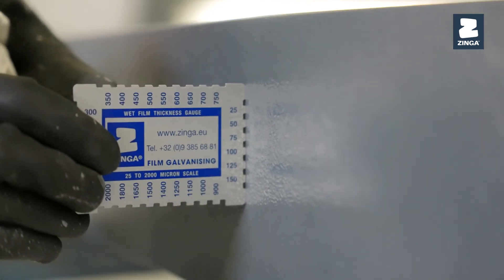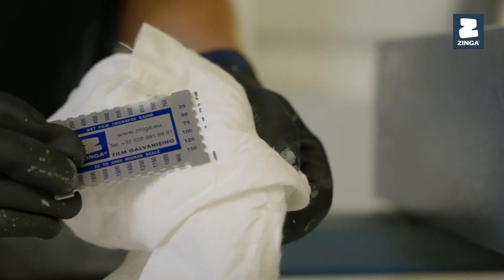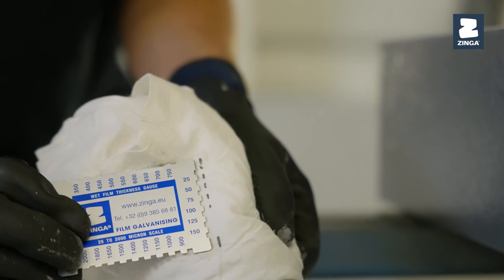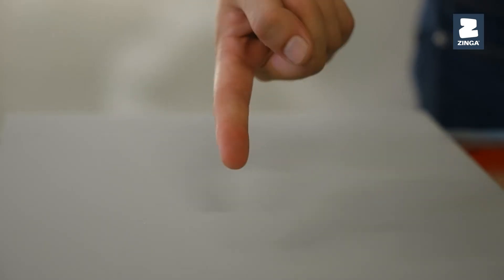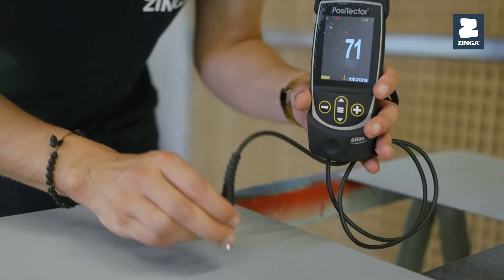Use a paint comb to check the wet film thickness during application. When the layer is fully dried, measure the dry film thickness with a magnetic gauge.